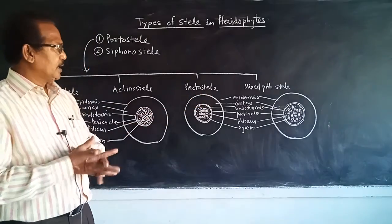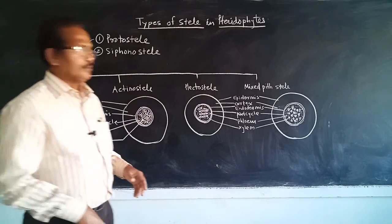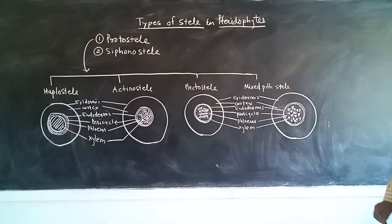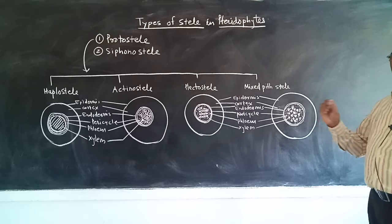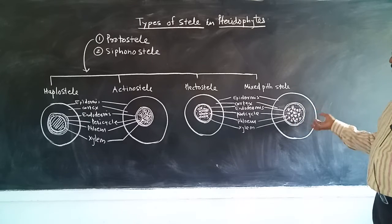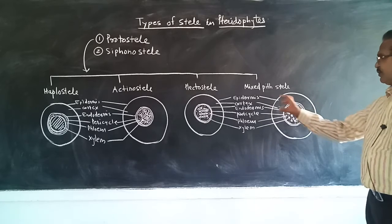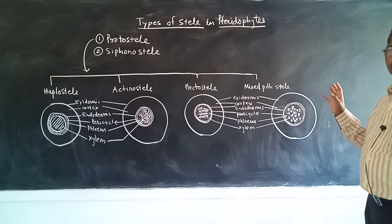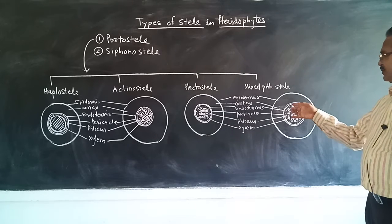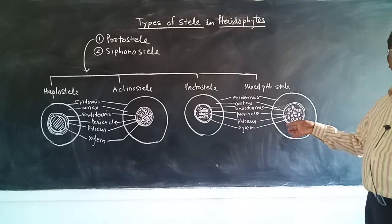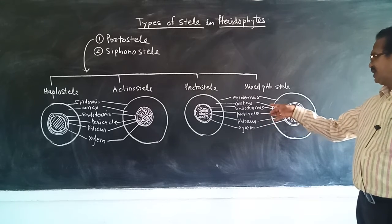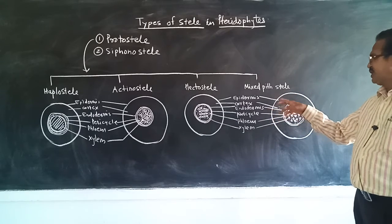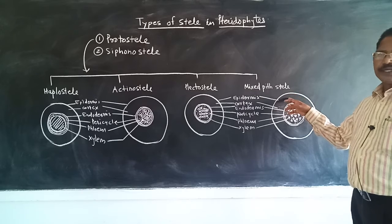And the last is mixed protostele. The xylem element is present in a number of groups, small patches, and it remains mixed with the phloem tissue. That's why it is called mixed protostele. The outermost layer of the stele is pericycle, then endodermis, then cortex, and epidermis.